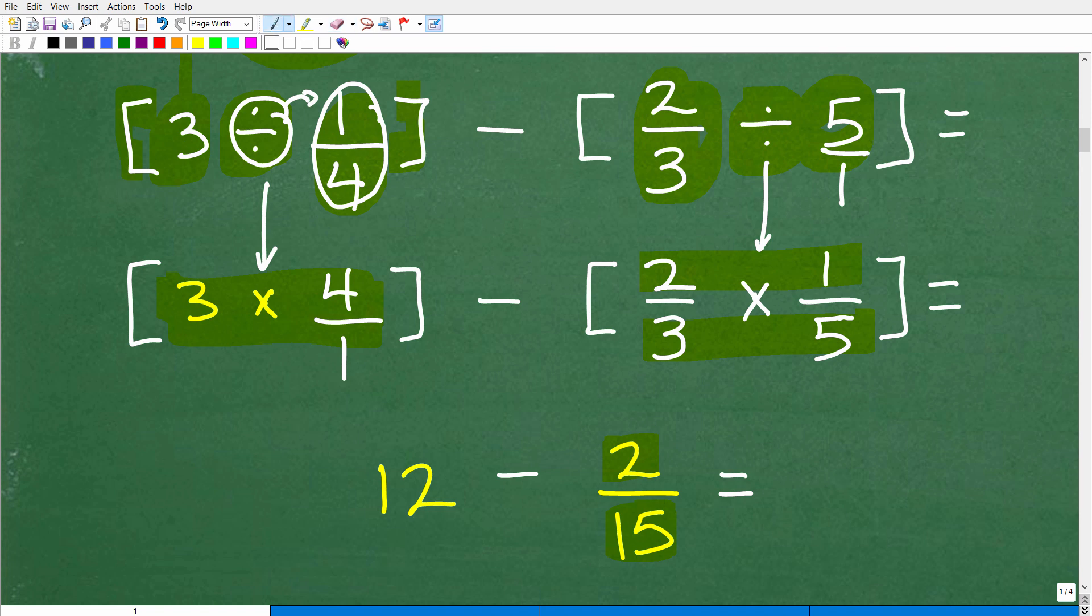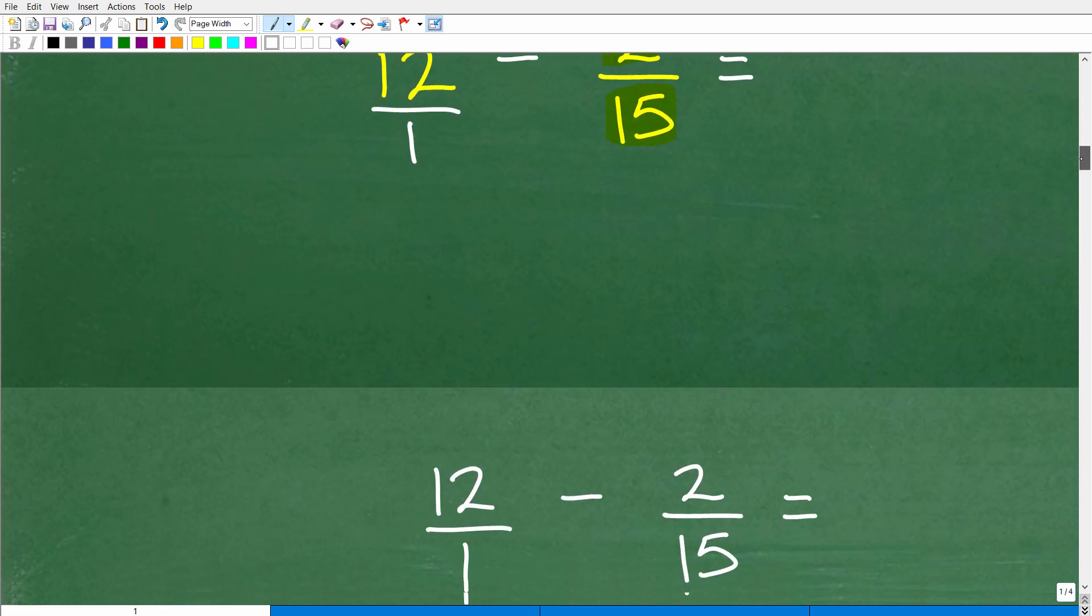Okay, so here is what we have. So far, as we walk through the solution here, we're down to 12 minus 2/15. Now, you might be saying, well, this isn't a fraction in and of itself. Well, anytime you want to have a number look like a fraction, you can always write it over 1. When you have an integer value or a whole number. So now you've got to figure out what 12/1 minus 2/15 is equal to. And let's go ahead and take a look at that part of the problem.